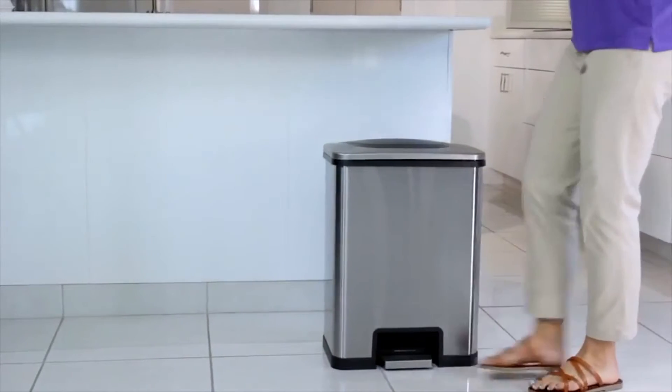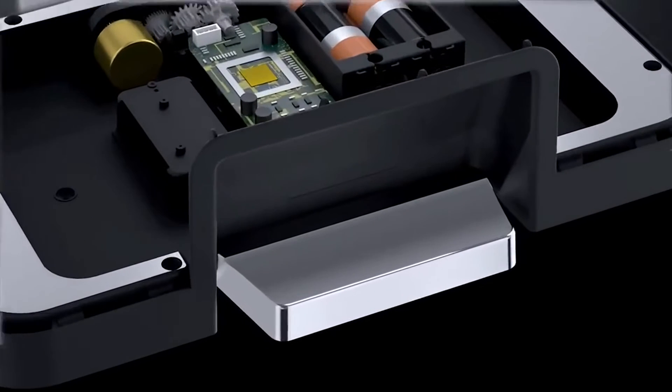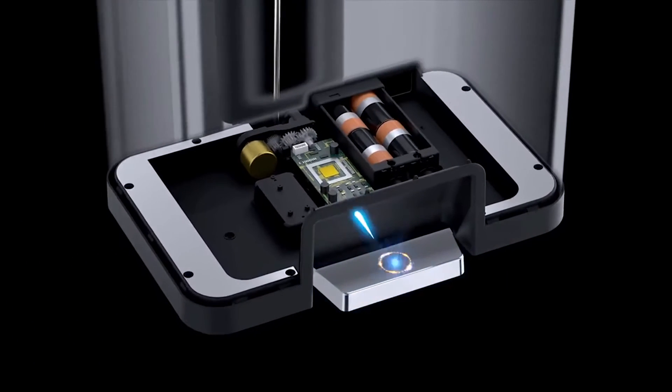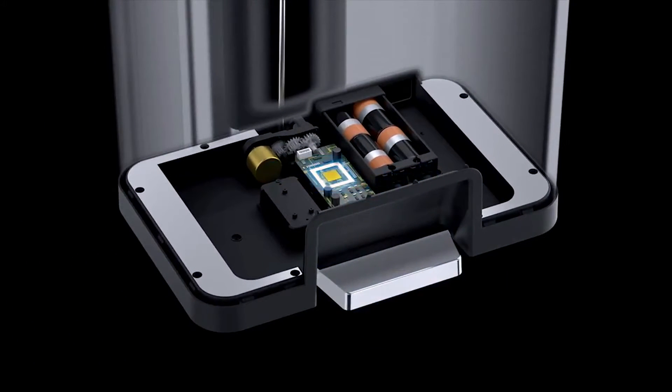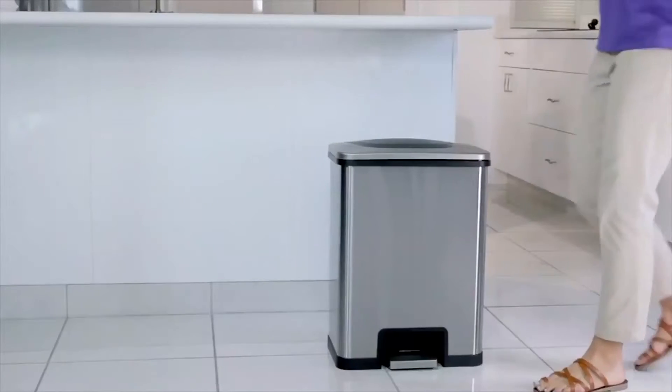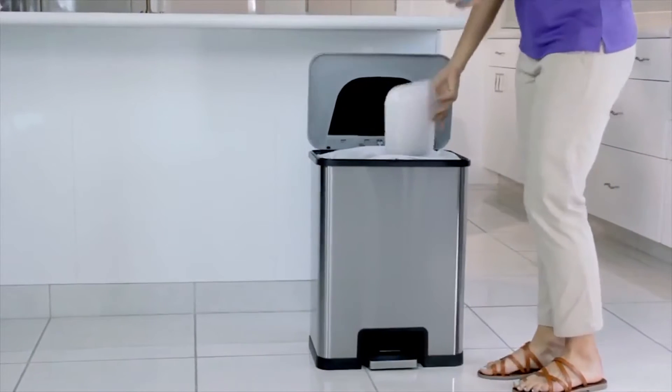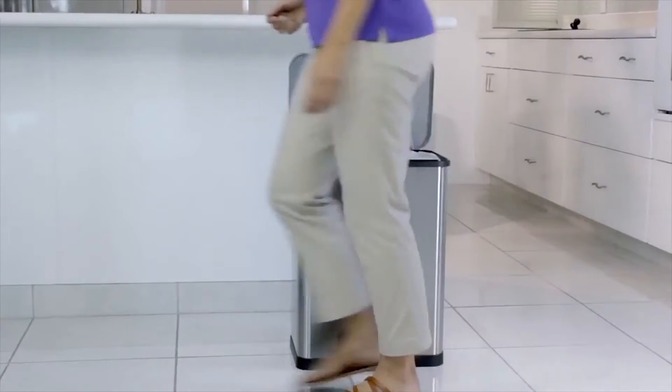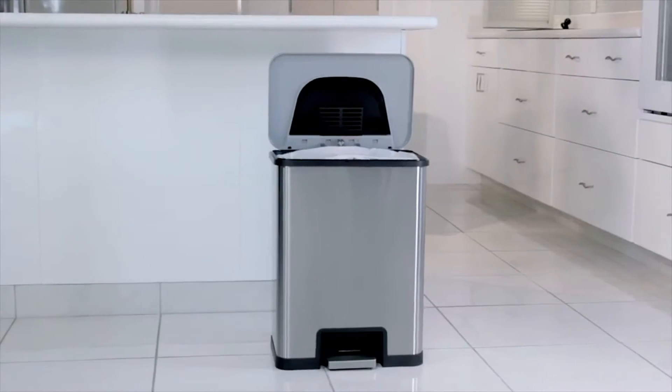Premium features: trash bag retainer ring stops a full bag falling in, air vents assist removal of a heavy bag, rubber feet prevent floor scratches. Warranty and power: one-year manufacturer's warranty included. Use 4 D batteries, not included, or optional AC adapter, sold separately.